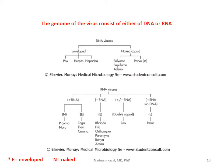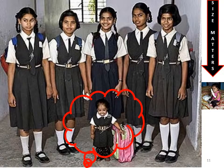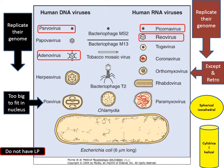Size matters. On the left are human DNA viruses, on the right are human RNA viruses, compared to a typical bacterium like Escherichia coli at about six micrometers long. The smallest human DNA virus is parvovirus; the smallest human RNA virus is picornavirus. Herpes virus is a larger virus; pox viruses are large — too big to even fit in the nucleus. Chlamydia, not a virus, is about 0.45 micrometers, which confirms the idea that viruses pass through filters.